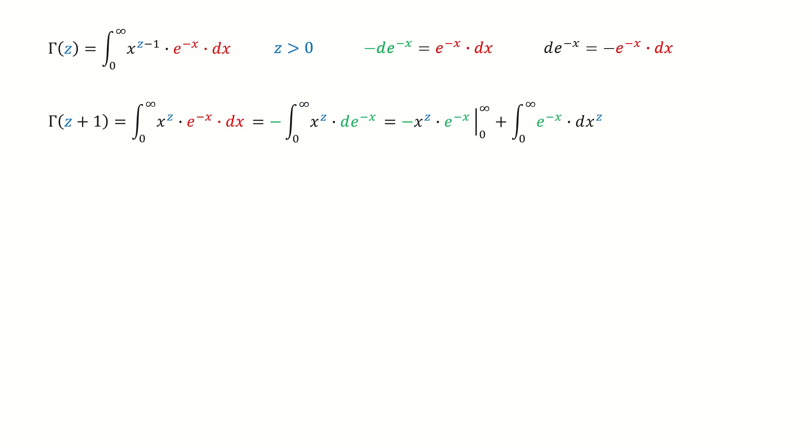Now we plug in to replace the right term. Then we do the integral by part. Because z is positive, the first term vanish at 0.